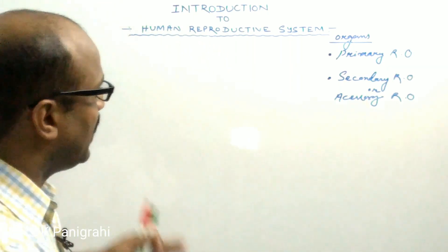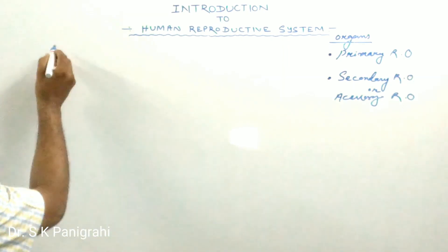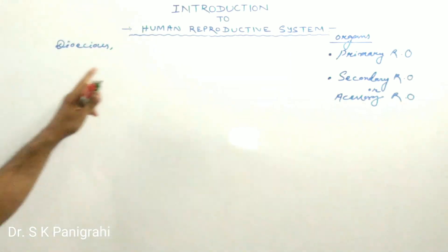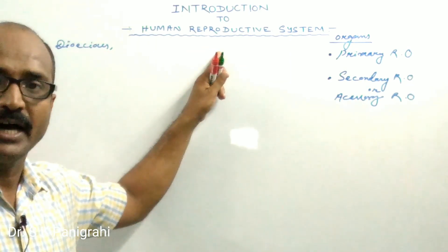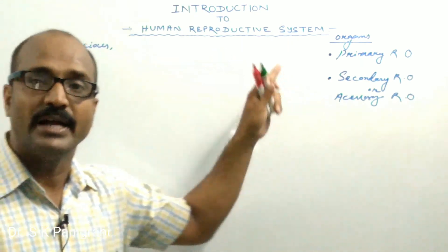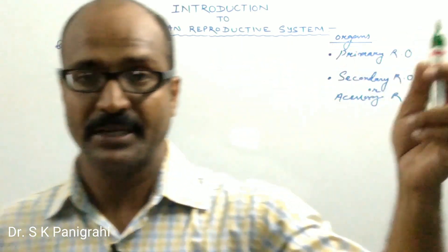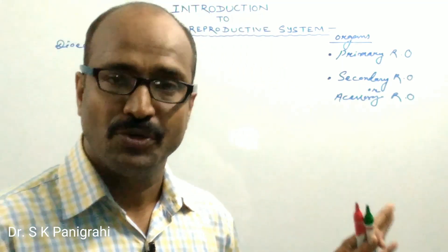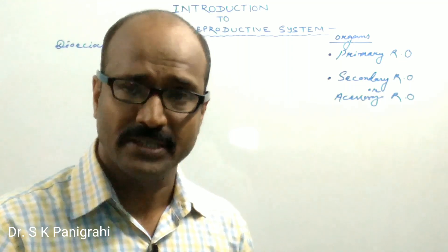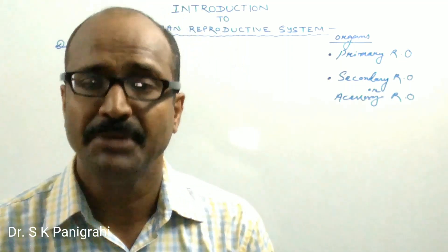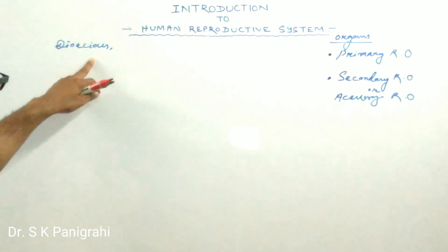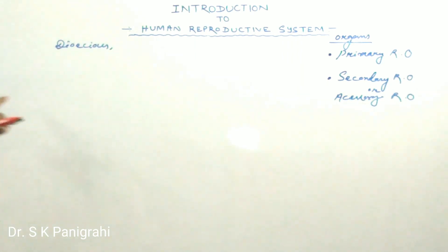Humans are dioecious. It means the male reproductive organ is restricted in the male individual and the female reproductive organ is present in the female individual. So you can say that the sexes are separate — the male individual and the female individual are separate. This condition is known as dioecious.